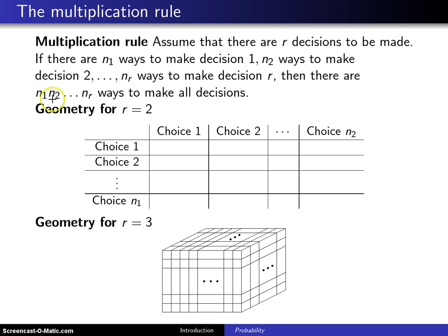then there are n1 times n2 times n3, all the way up to n sub r ways to make all the decisions. All you need to do here is multiply the number of outcomes.